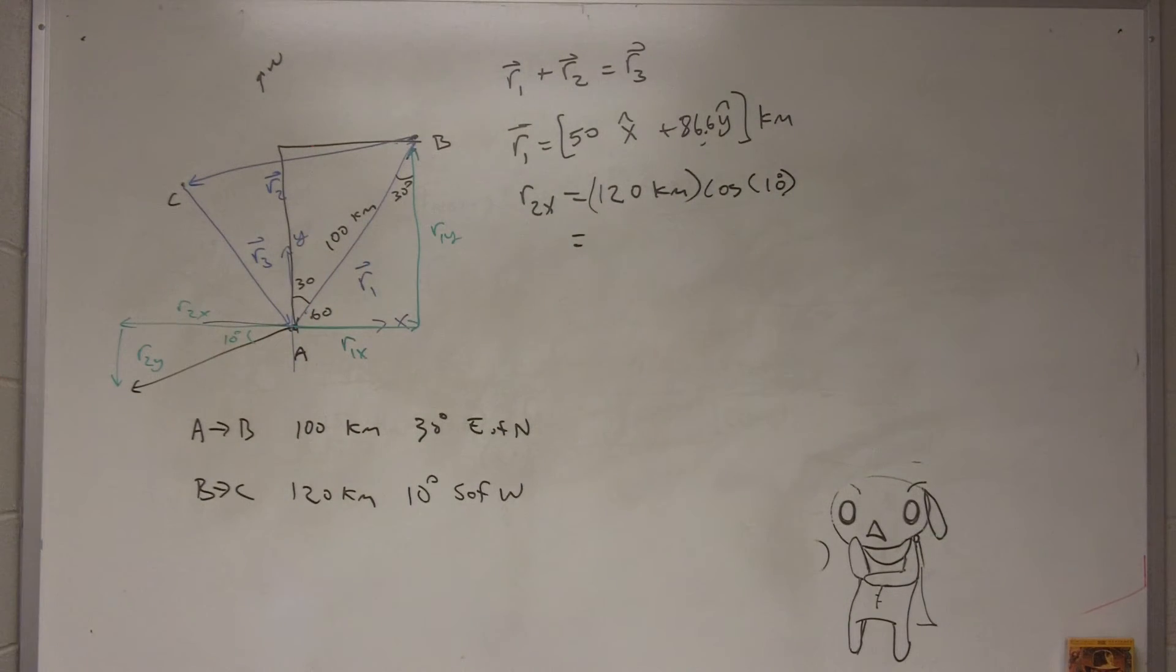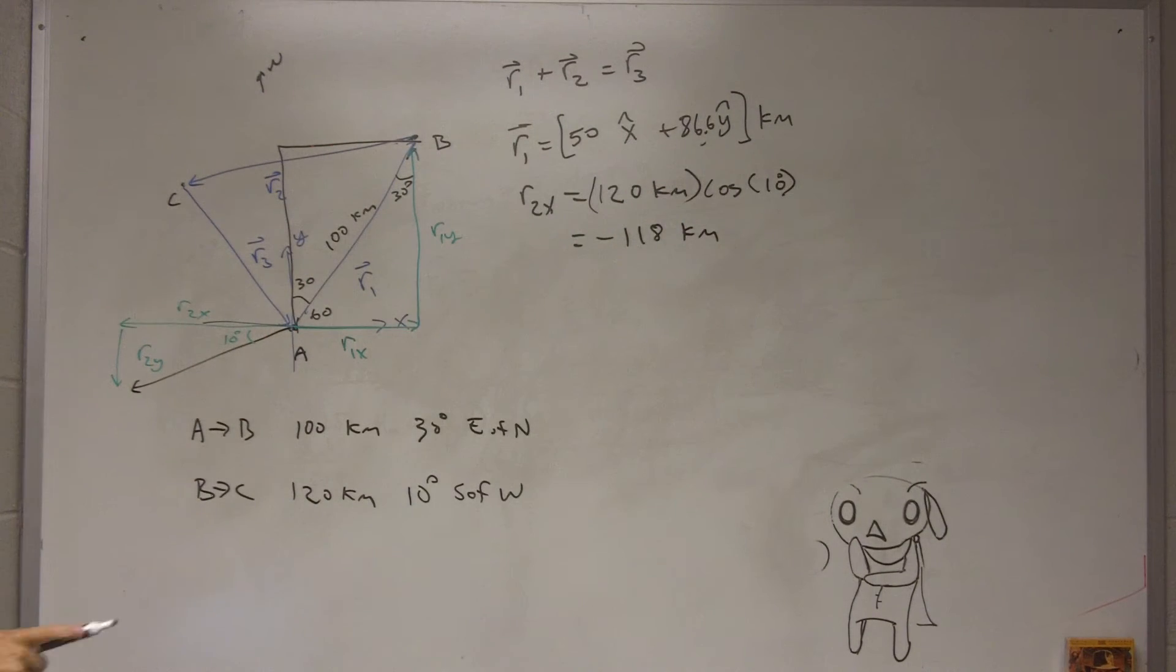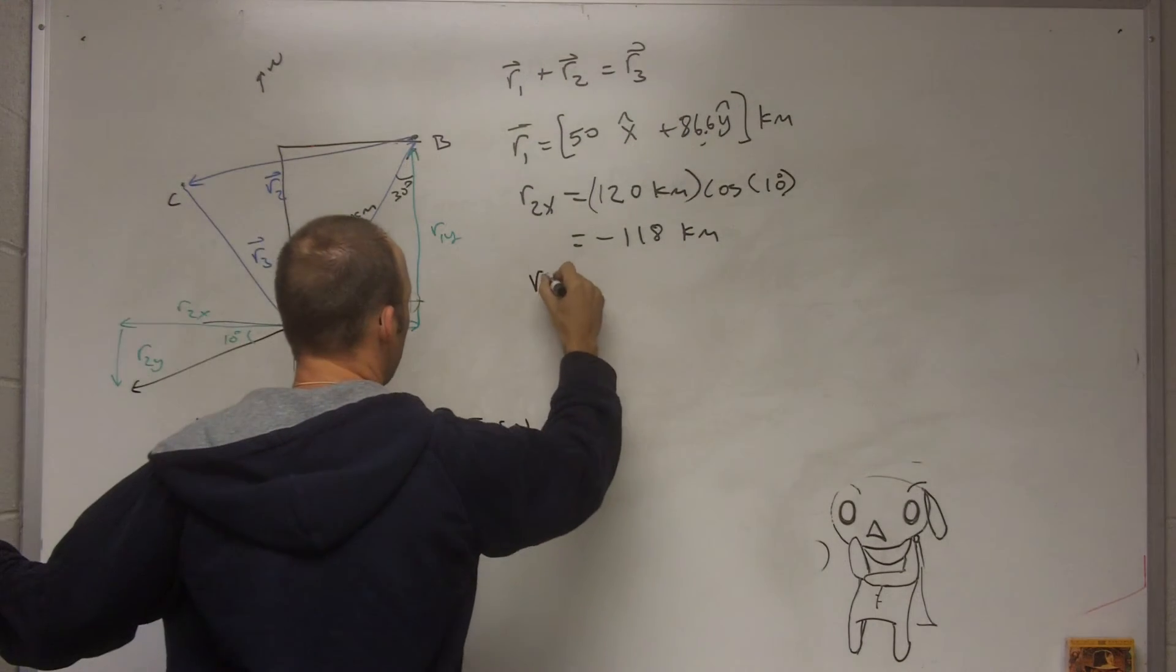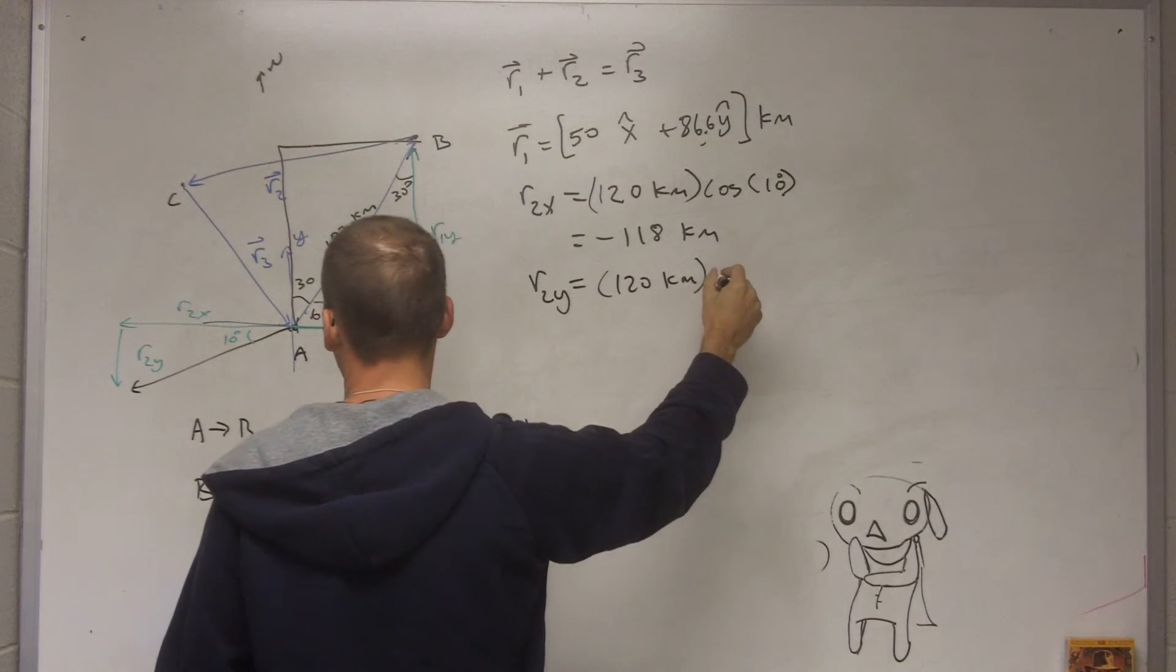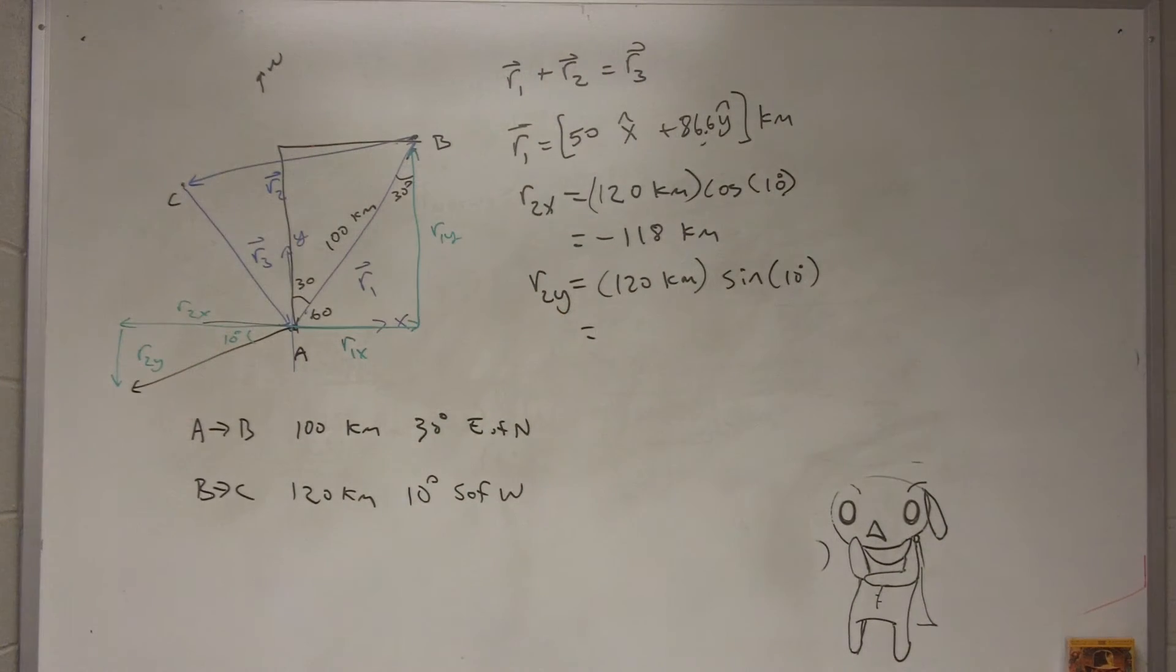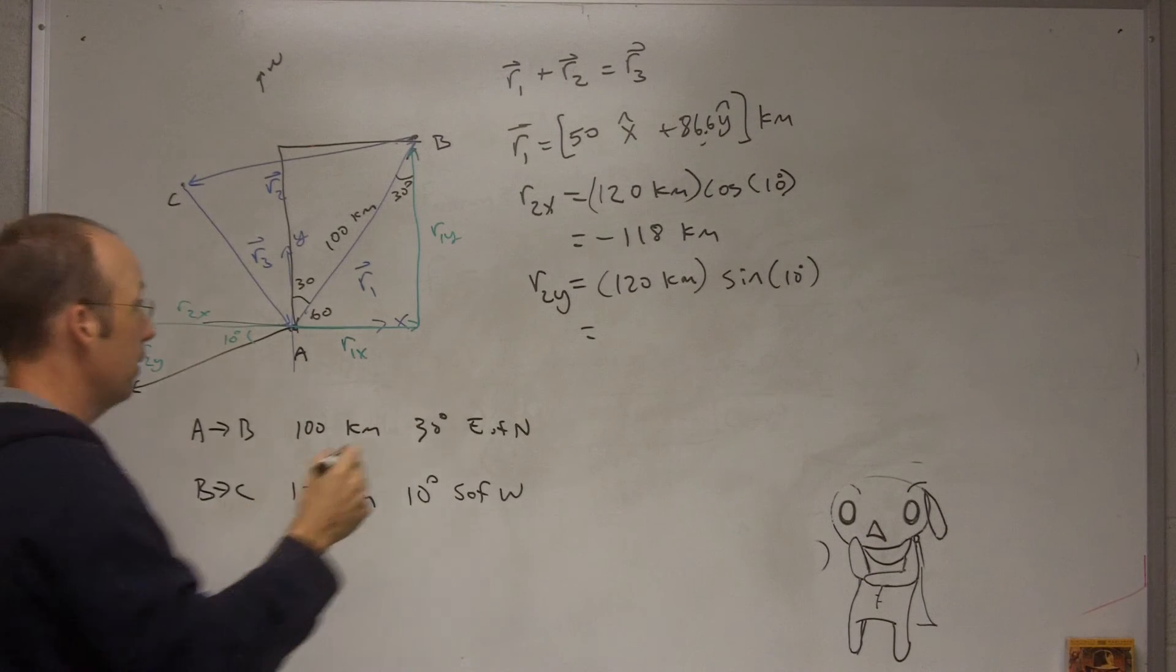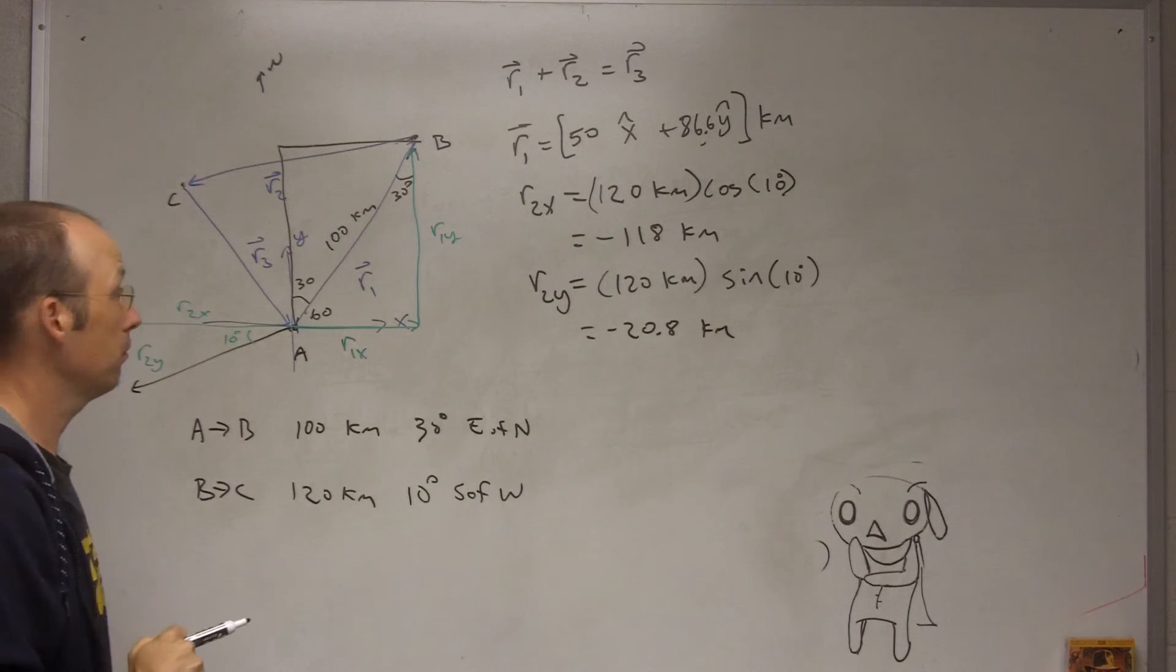So in this case it's going to be r2, which was 120 kilometers, times cosine of 10 degrees. And that's going to be equal to 118, negative. And the negative didn't come in anywhere, I put it there because I know the way I drew my triangle that that's in the negative x direction, so it has to be a negative component. And then r2y is going to be 120 kilometers times the sine of 10, so that's 20.8 negative.